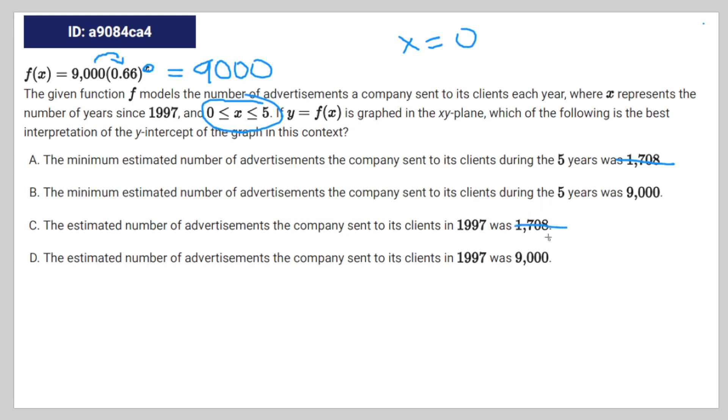In the context of the problem, this would mean that zero years have passed after 1997. But here it's saying they're in the first five years—like how would this tell you anything about the first five years if zero years have passed? Therefore it can't be A, or B for that matter.